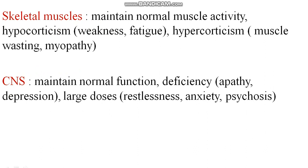In skeletal muscles, glucocorticoids maintain normal muscle activity. However, if there is a decreased level of corticosteroids — hypocorticism — there can be weakness and fatigue. If there is hypercorticism, or an increased level of corticosteroids, there can be muscle wasting and myopathy.